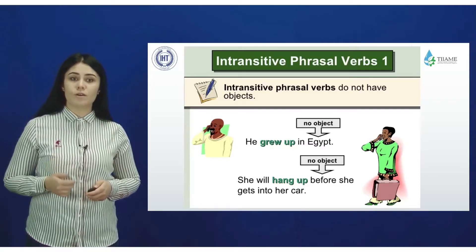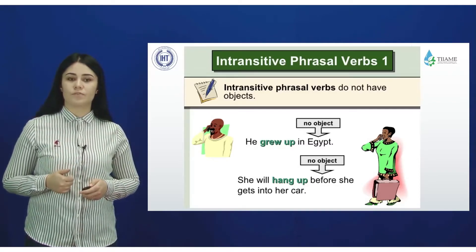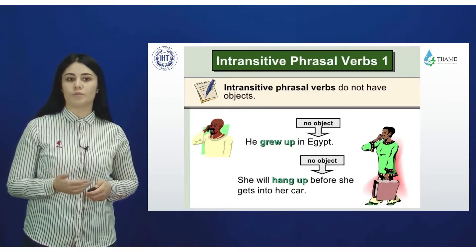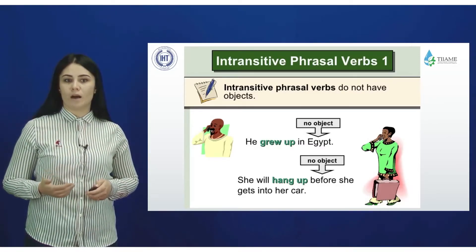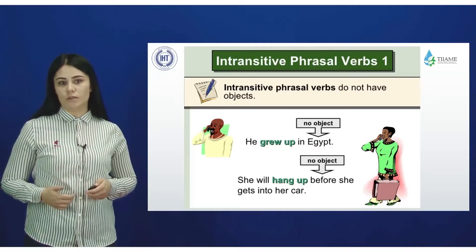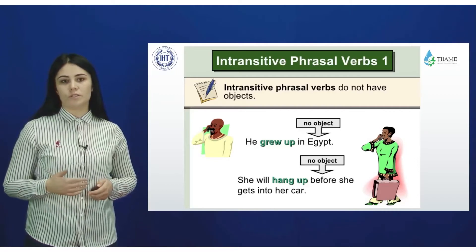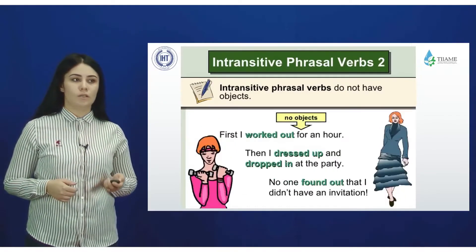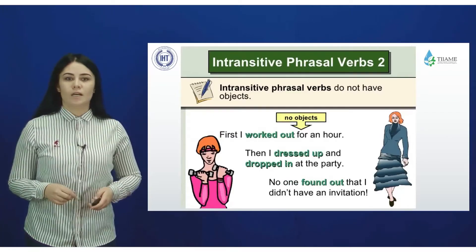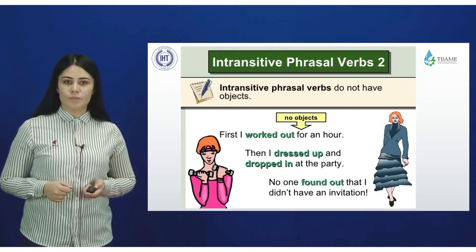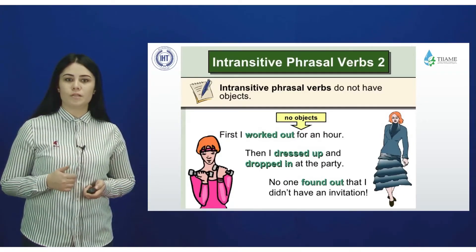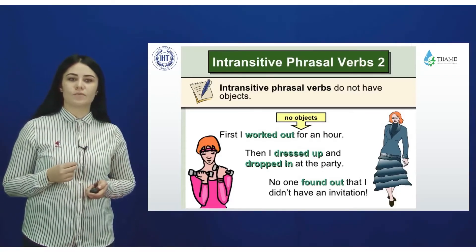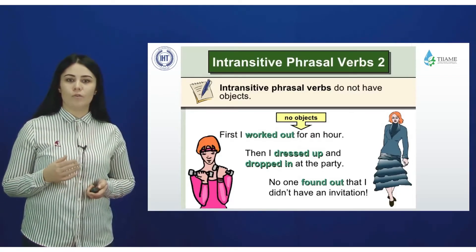Intransitive phrasal verbs do not have an object. For example: 'He grew up in Egypt' or 'She will hang up before she gets into the car.' As you can see, we cannot use an object after these intransitive phrasal verbs.